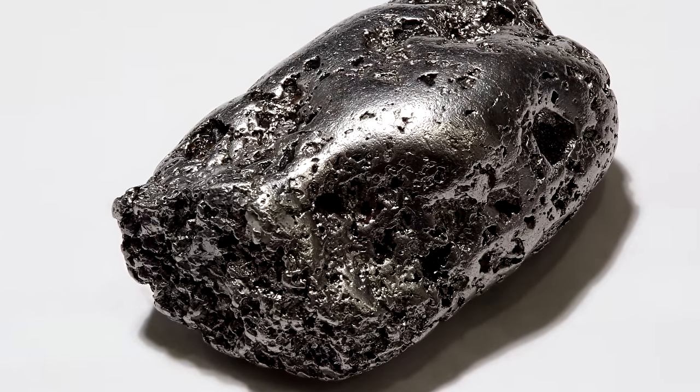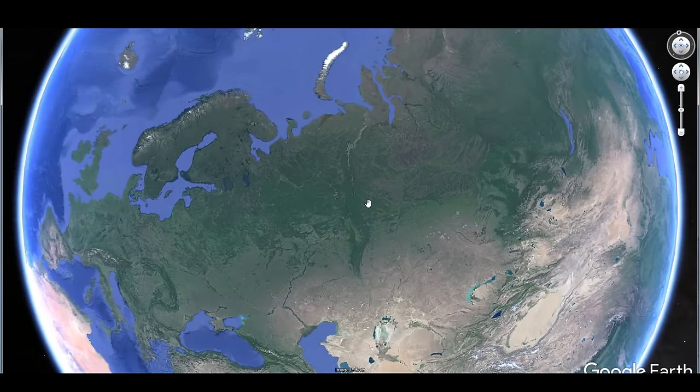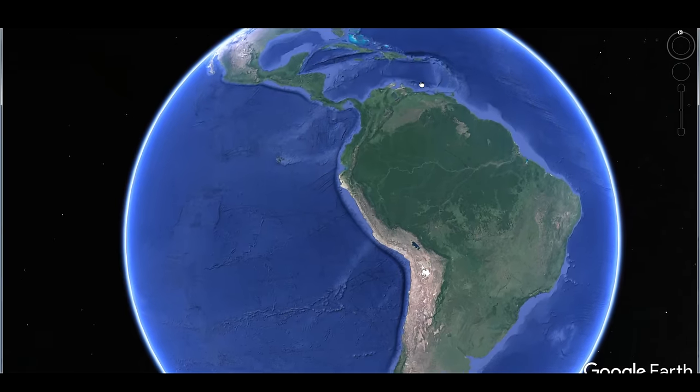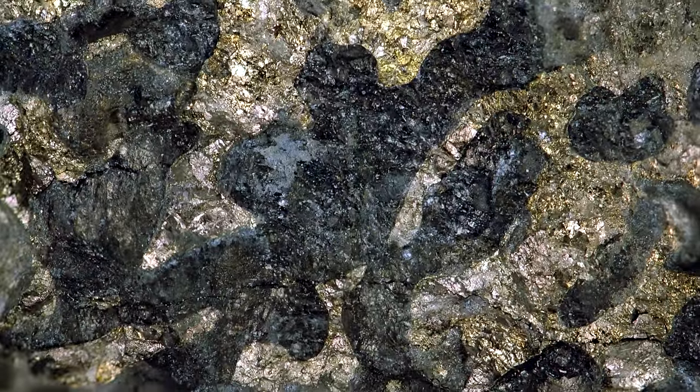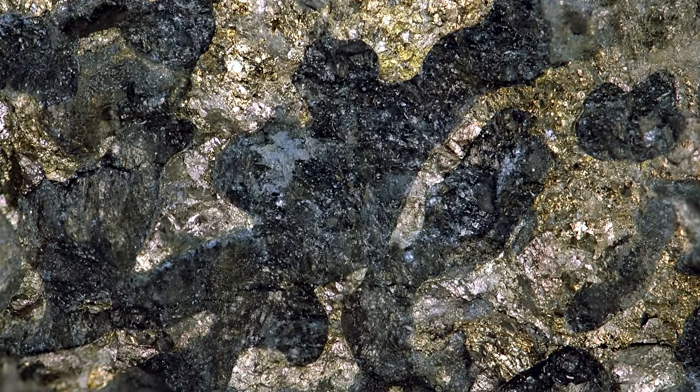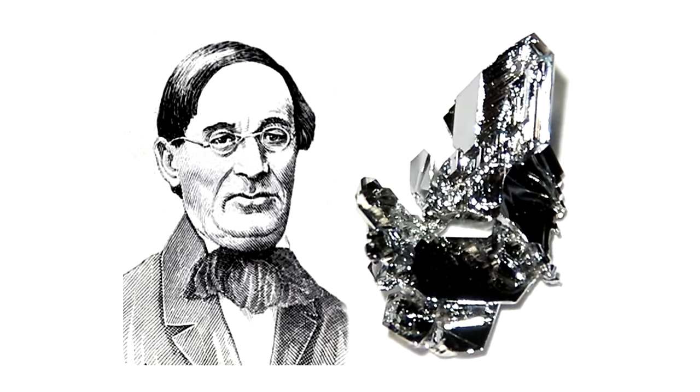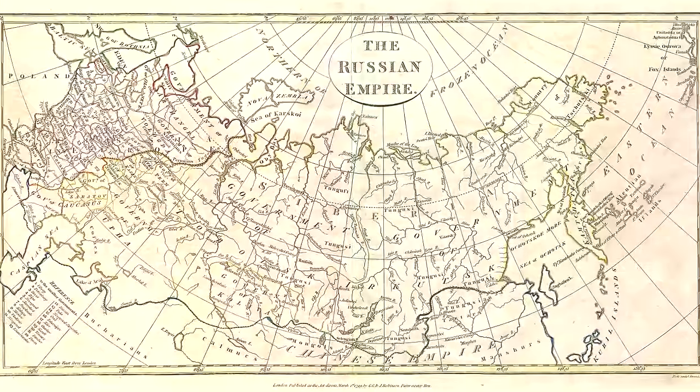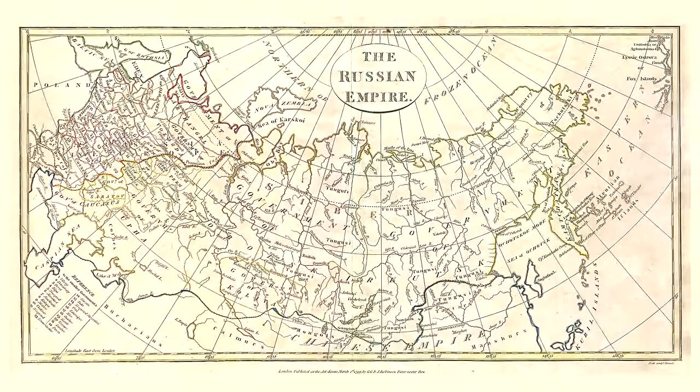Ruthenium is extracted from platinum ores. There are lots of ruthenium-rich deposits in the Ural mountains and also in the mountains of South and North Americas. By the way, pure ruthenium was first extracted from Ural ore by Russian scientist Karl Ernst Klaus in the Kazan Federal University. He named the element after his motherland, Russia.